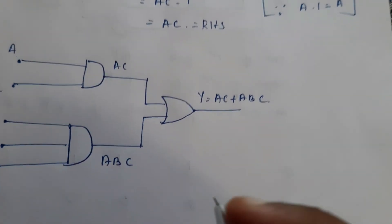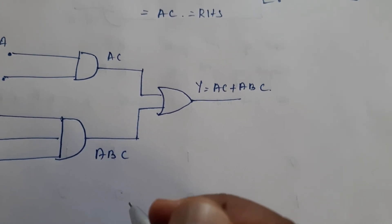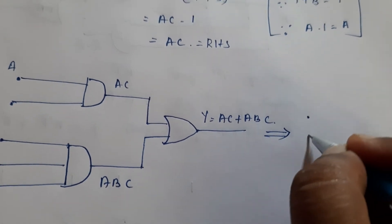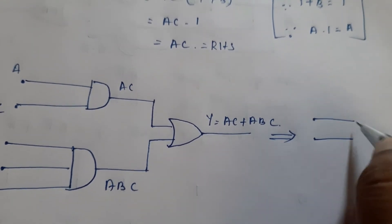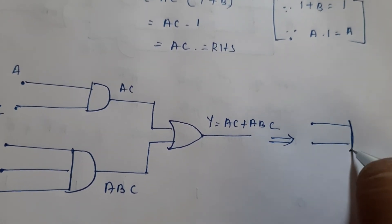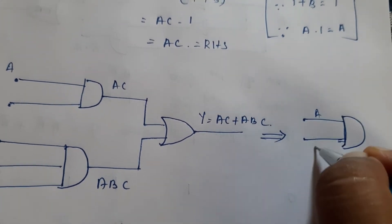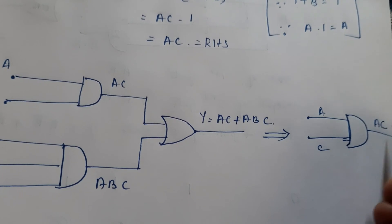Now for the right hand side, what do you have to draw? That is AC. So what will you be drawing? So this is equal to AC. So this is A. This is C. Here this is an AND gate. So AC, the output is AC.